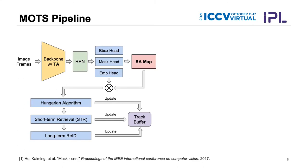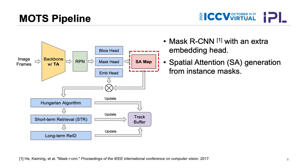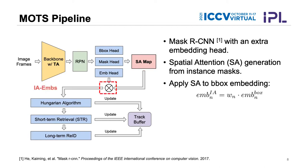Images are sent to a Mask RCNN-based architecture with an extra embedding head for object detection and bounding box embedding feature extraction. We then use a spatial attention map from this network and apply the bounding box embedding features to obtain instance-aware embeddings, which highlight the foreground features for each bounding box. These instance-aware embeddings are sent to the tracking stage, where a Hungarian algorithm cooperates with short-term retrieval (STR) to associate objects in the short term, and Re-ID is applied as a post-processing stage to link tracks with long-term occlusion.